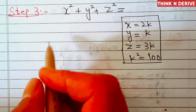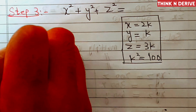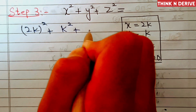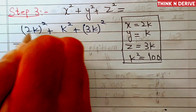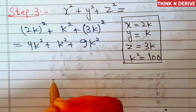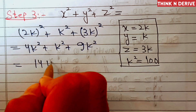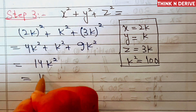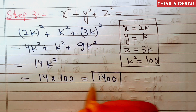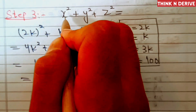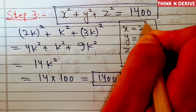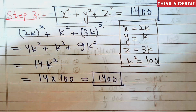Now in step number three, we'll find the value of x square plus y square plus z square. Value of x is 2k, so x square is 4k square; y square is k square; and z is 3k, so z square is 9k square. This gives 4k square plus k square plus 9k square, which is equal to 14k square. Substituting k square equal to 100, we get 14 times 100, which is equal to 1,400. So x square plus y square plus z square is equal to 1,400.